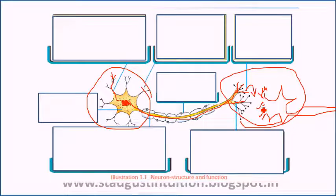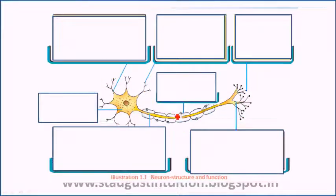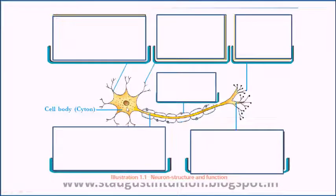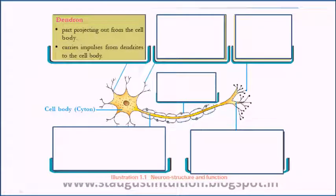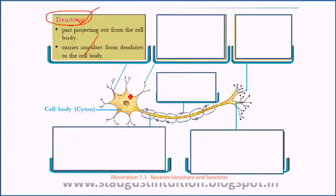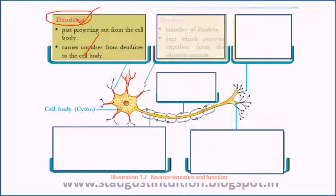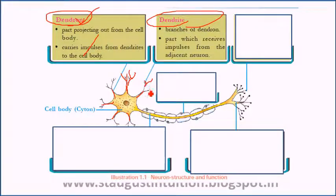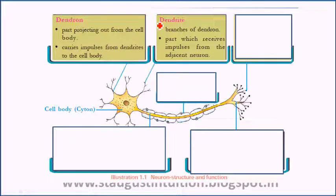I will learn a little bit about the details. First of all, we have a cell body — this is called the cytone. The cytone is the cell body. From the cytone extends the dendron. The dendron leads to the dendrites. Dendron, dendrite — clear?